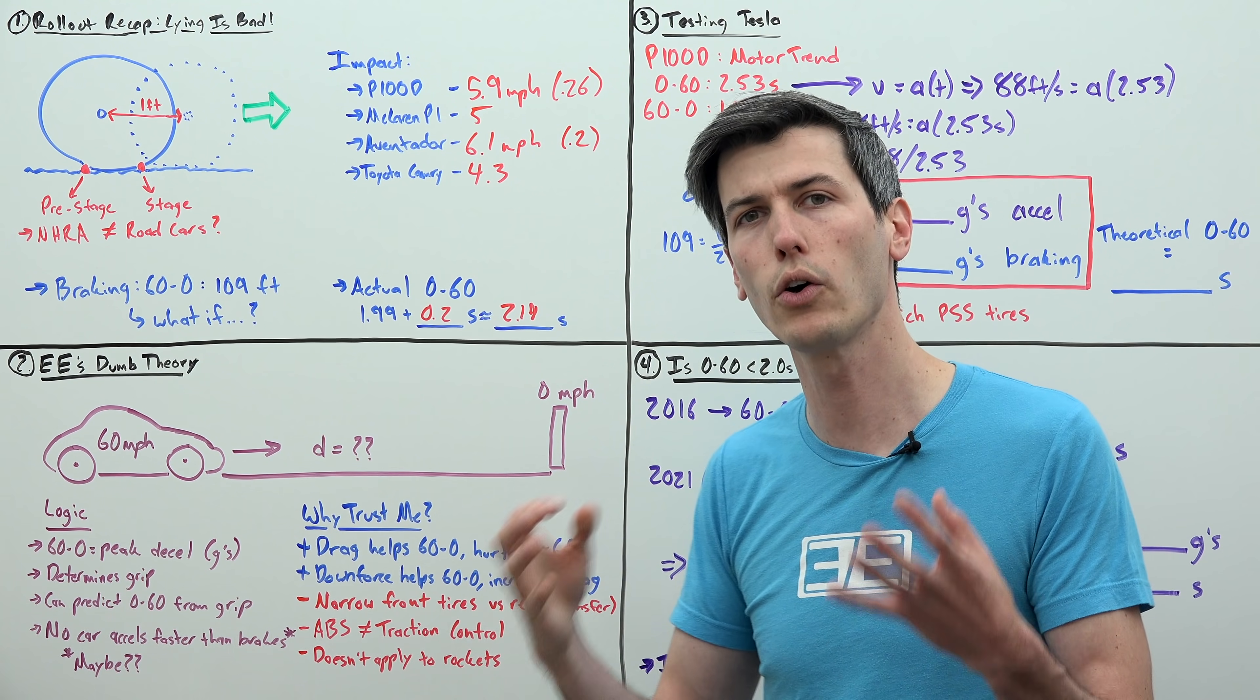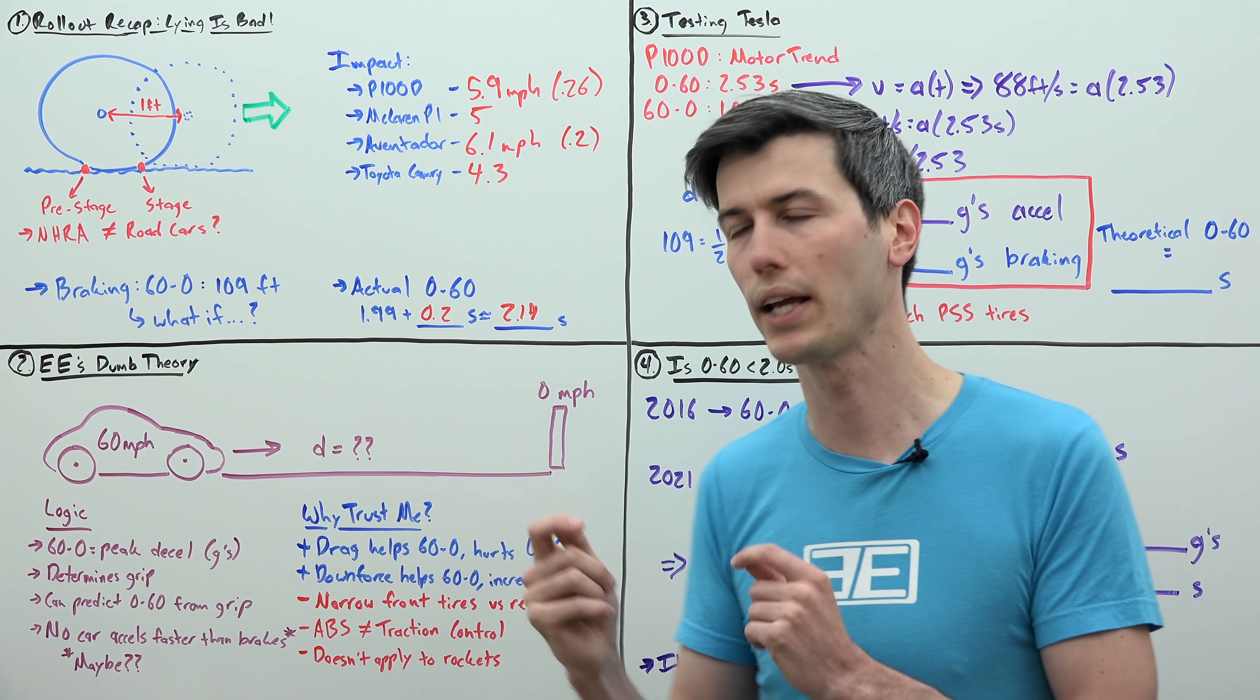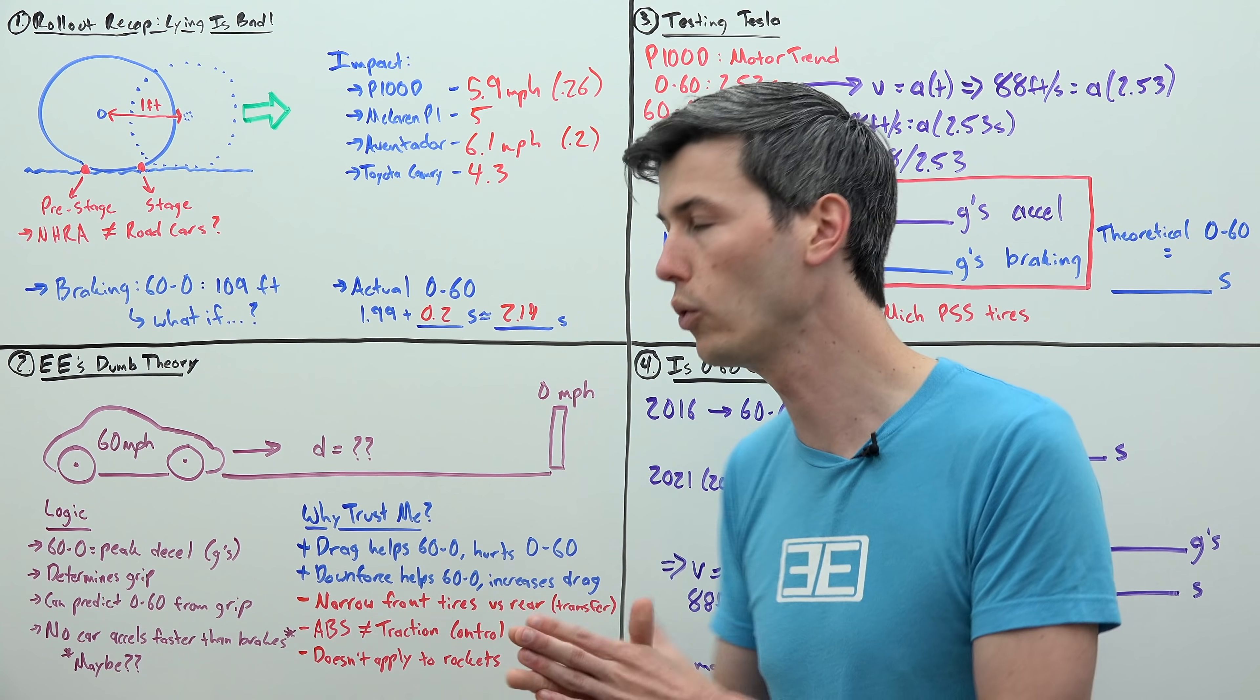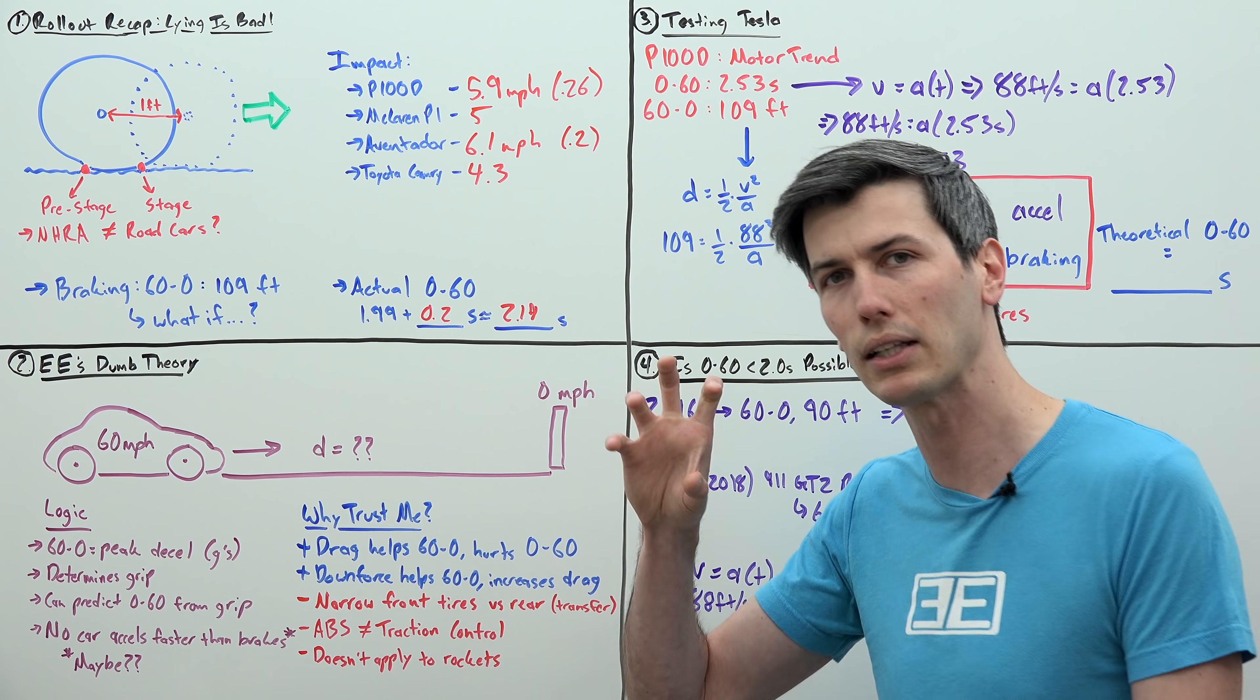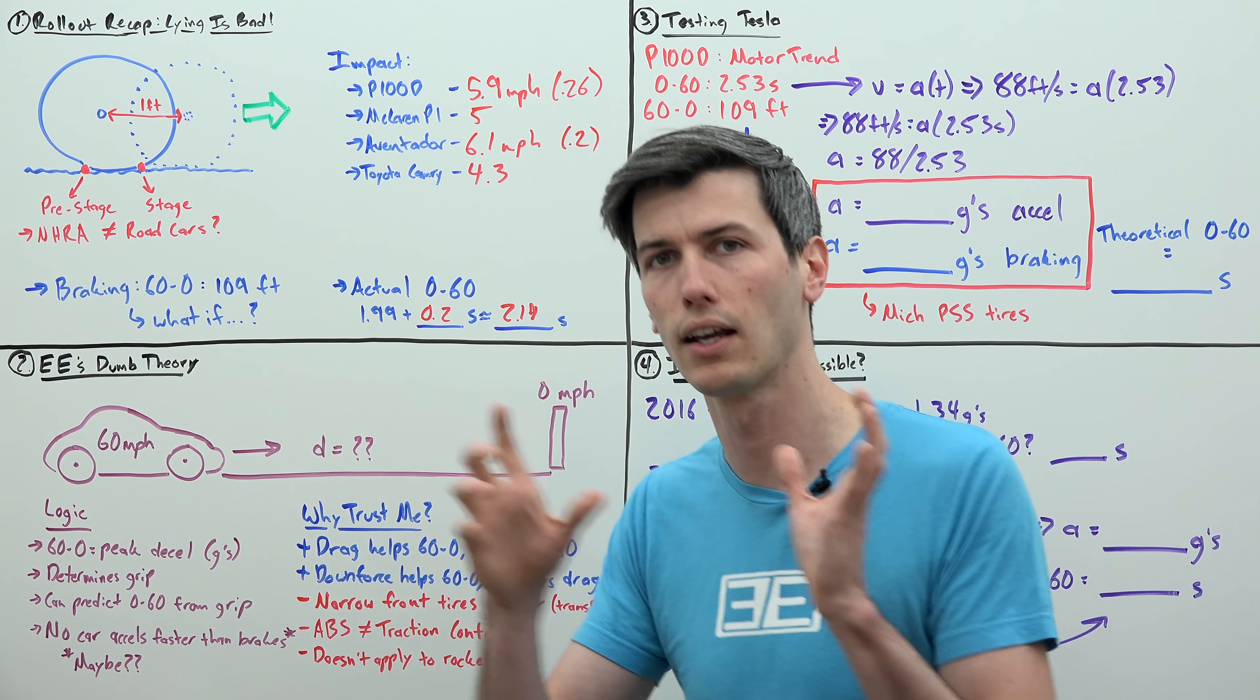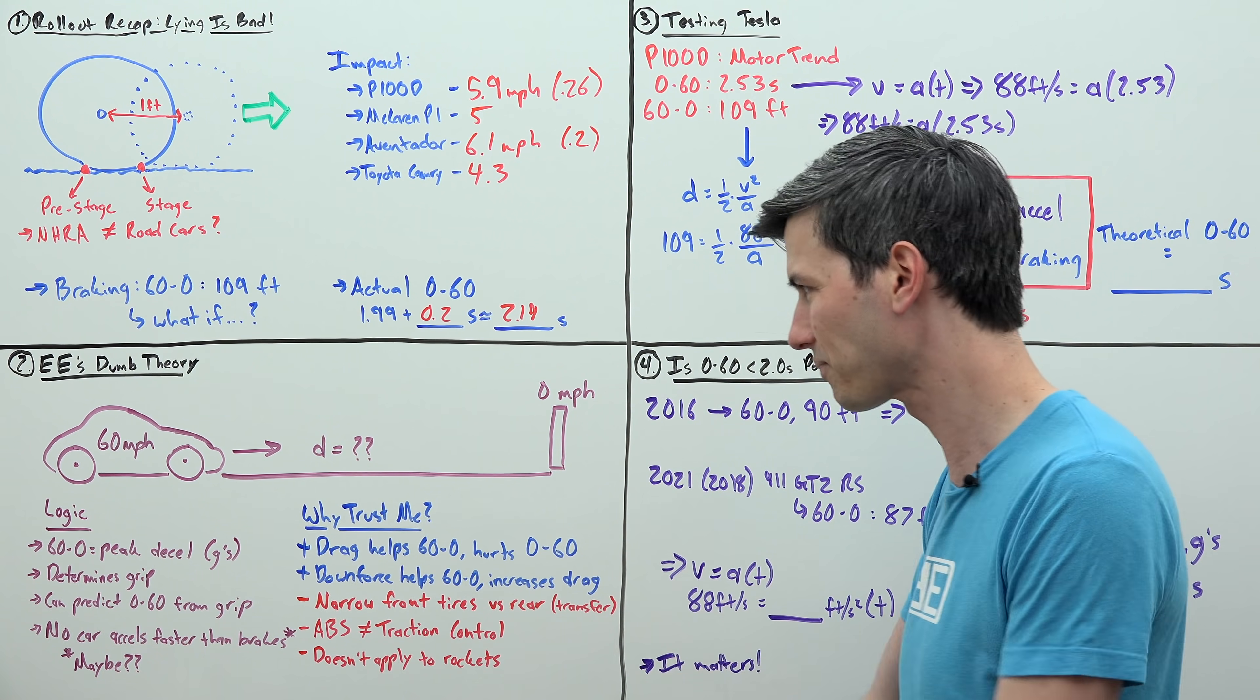Also, I think the argument could be made that ABS maybe isn't quite as fast to react as the most sophisticated electronic traction control system using an electric motor. I think that could go either way, but I think in reality, an electric motor might be a little bit more sensitive and help provide the exact amount of force needed to not break friction and accelerate as fast as possible.